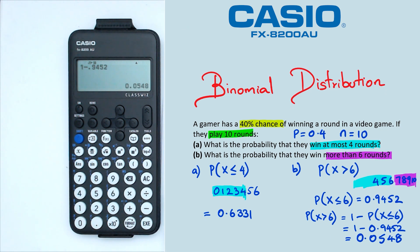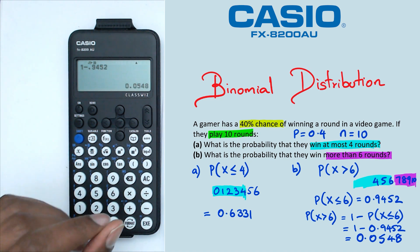Now apologies about the tight space squeeze there. But folks, that's pretty much how you do binomial distribution on this particular Casio FX8200 AU calculator.